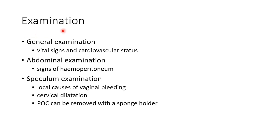Now let us see about the examination of a case of abortion. General examination should be done to measure the vital signs and to assess the cardiovascular status. Abdominal examination should be done to look for signs of hemoperitoneum and to rule out ectopic pregnancy. Speculum examination should be done to rule out local causes of vaginal bleeding and to look for cervical dilatation. During speculum examination, the products of conception can be removed with a sponge holder.